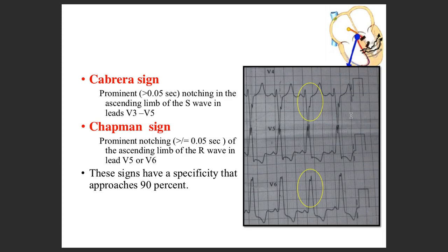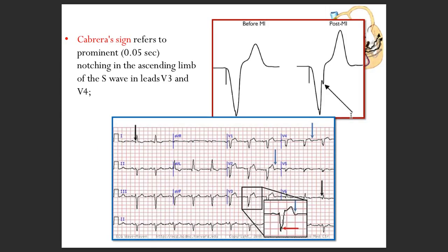The Chapman sign is in the ascending limb of the R wave, which you can see in one of the examples over here. If you come across these signs, you can have a specificity — yes, if someone is having acute changes like this, 90% of the times it will be truly positive.